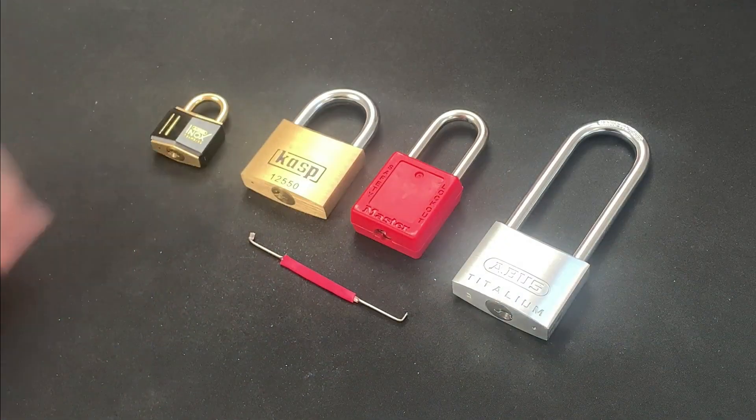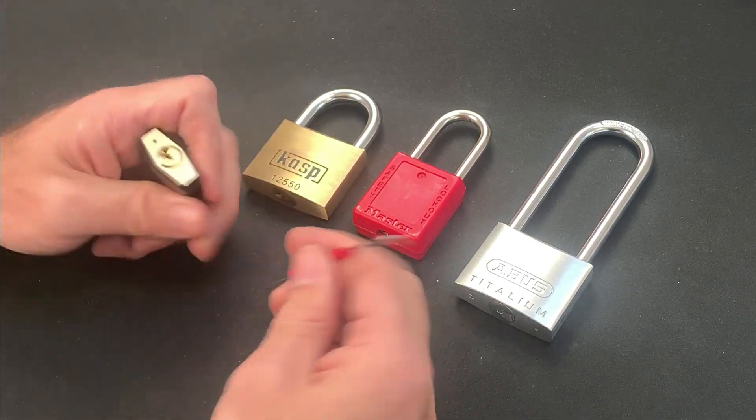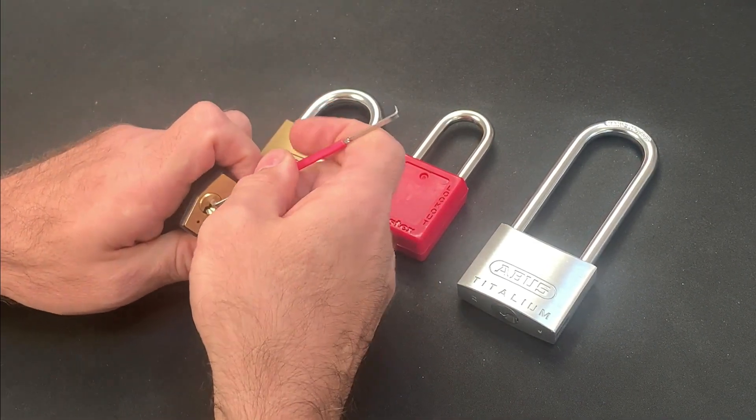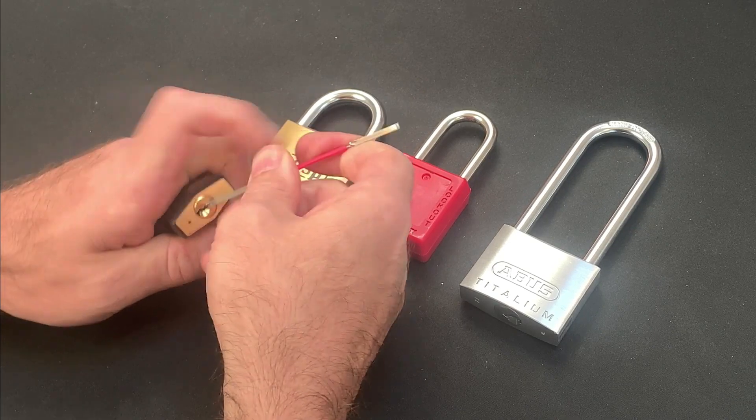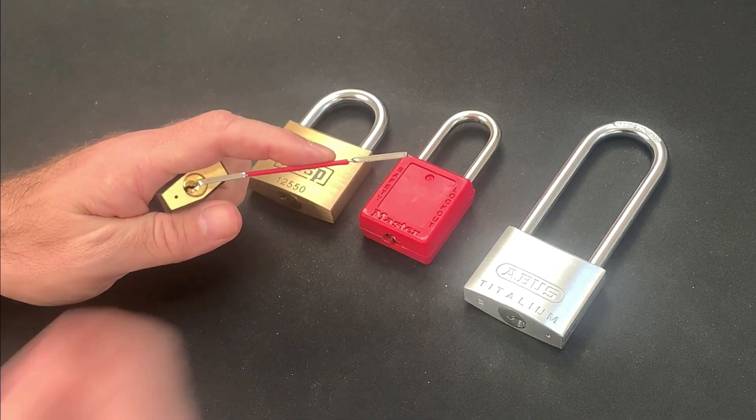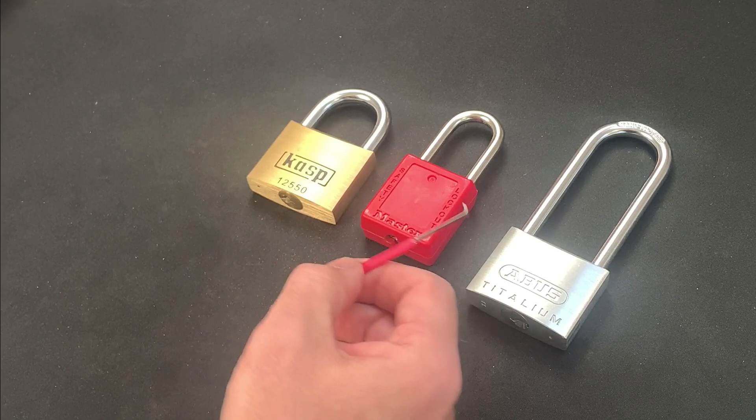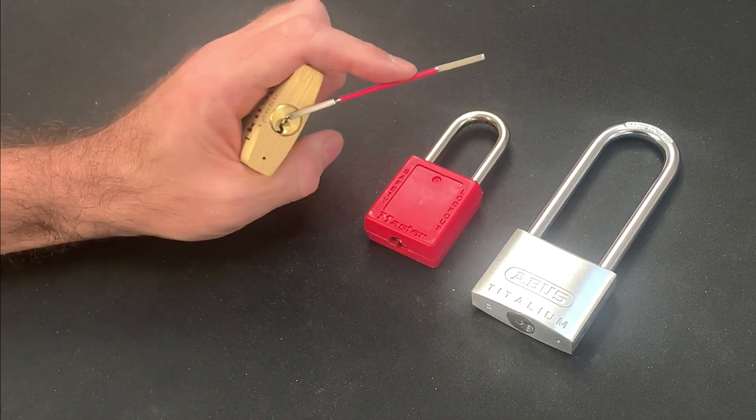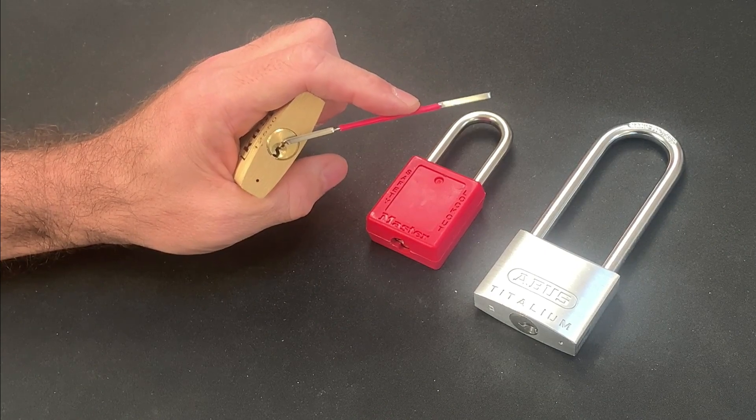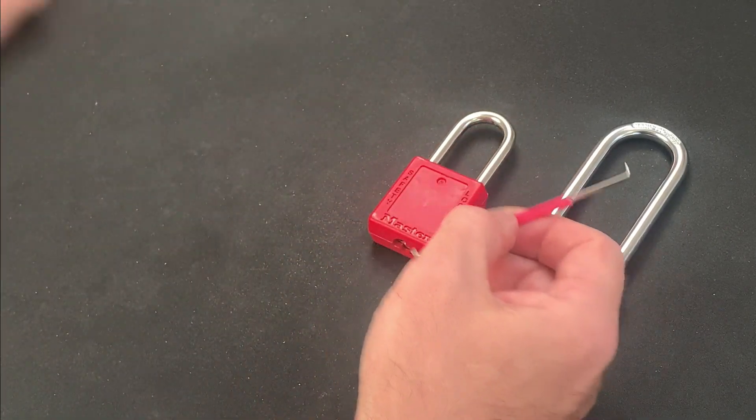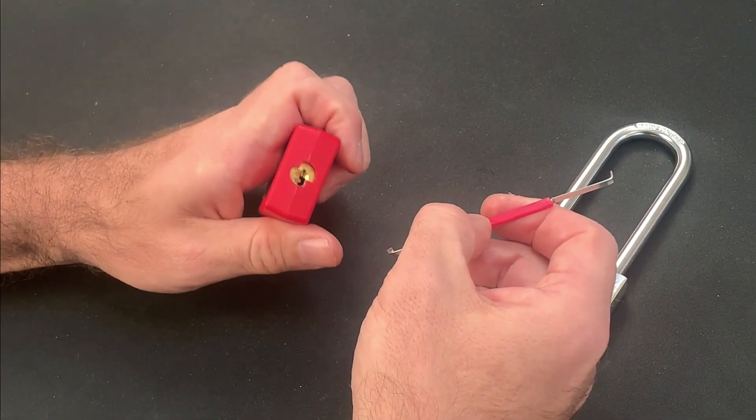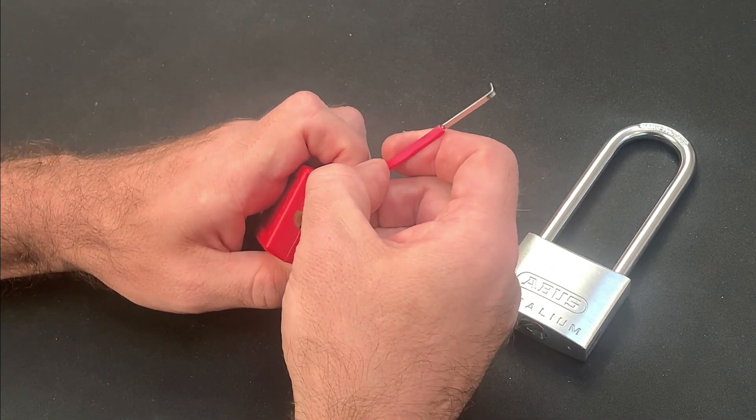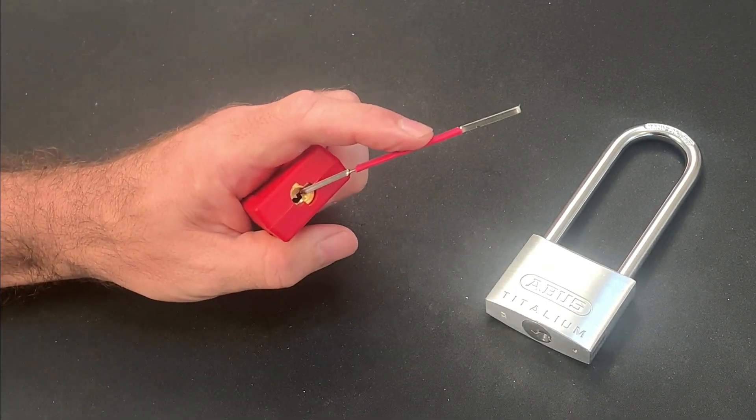Chris somewhat tongue-in-cheek calls this his universal tension wrench because it can so easily fit a wide range of keyways and offers both top and bottom of the keyway tension in one tool. This one was kindly made for me by Chris and I absolutely love it. It's comfortable in the hand, allows for really fine tension control and seems to efficiently apply torque on the core in a way that some of my other tensioners don't.